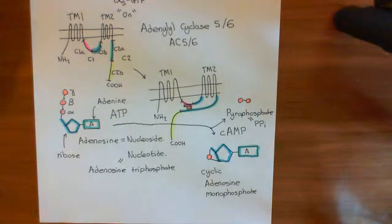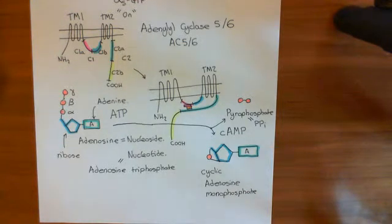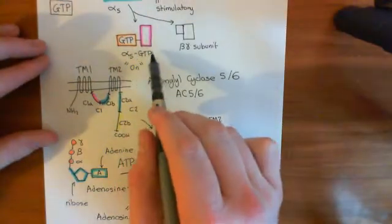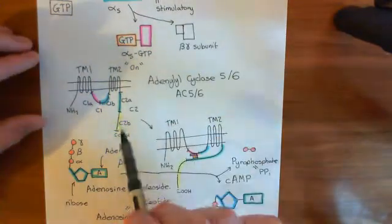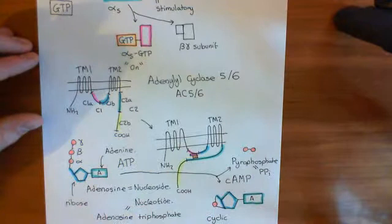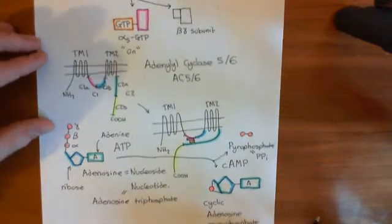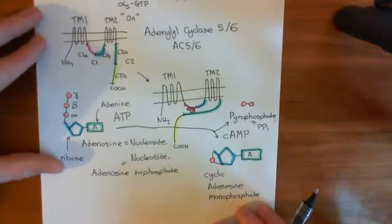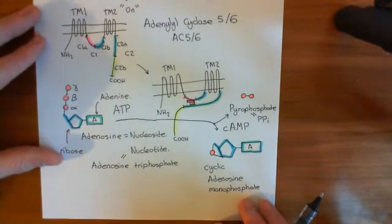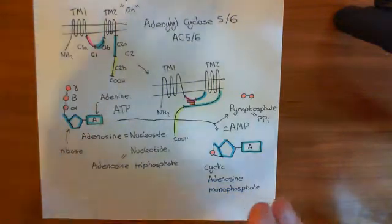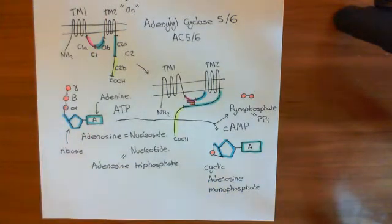Welcome to this next video in which we are discussing the effects of sympathetic stimulation on the heart. So far we've seen that when we stimulate the heart with noradrenaline, it will activate beta-1 receptors, which will lead to the activation of the alpha-s GTP subunit, which will then activate the adenylyl cyclase 5 or 6 enzymes, which will convert ATP into cyclic AMP. What we now want to see is what is the effect of cyclic AMP — basically, it's going to activate protein kinase A.